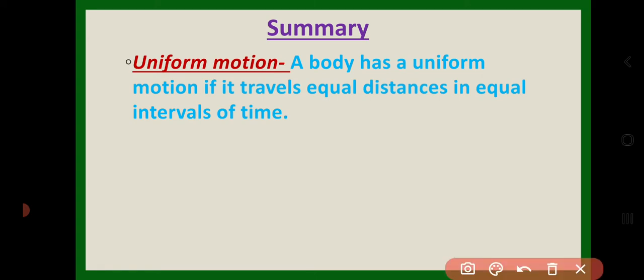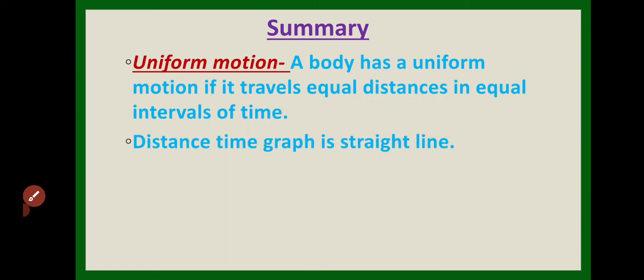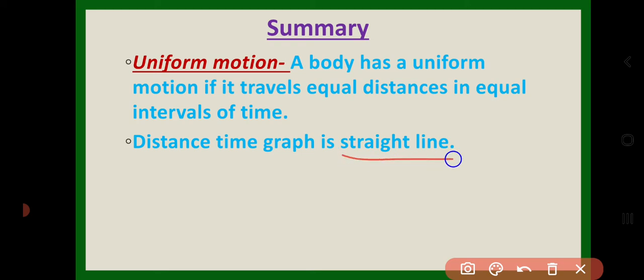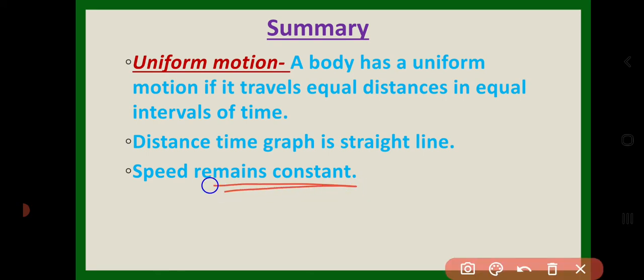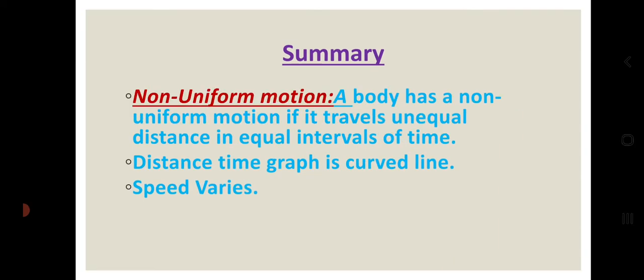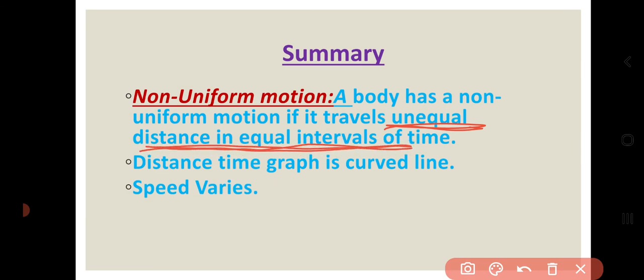Let us summarize what we have learned. Uniform motion: a body travels equal distance in equal interval of time; its distance-time graph is a straight line; and speed remains constant. Non-uniform motion: an object travels unequal distance in equal interval of time; its distance-time graph is a curved line; and the speed varies.